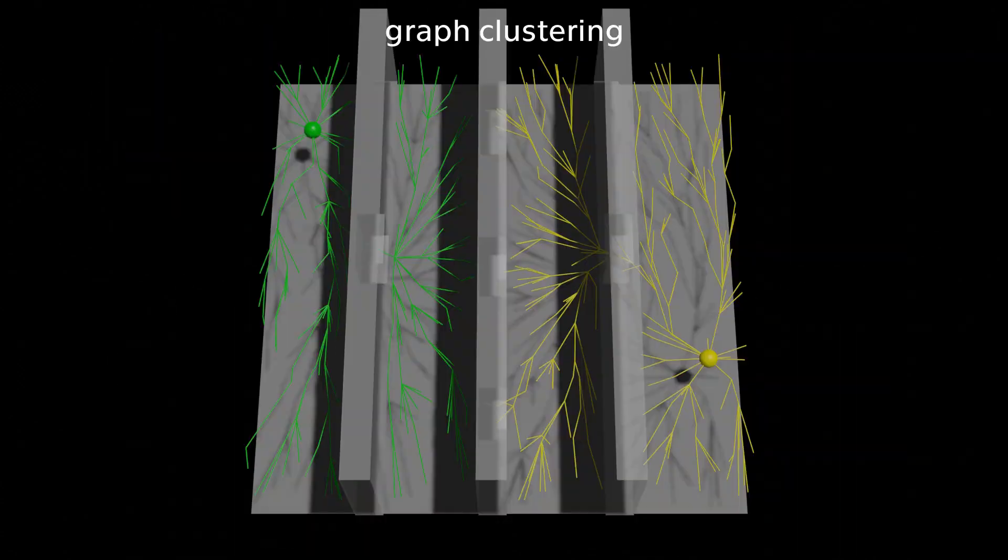We start by dividing the generated dense probabilistic roadmap into two clusters with minimum spanning tree structure with start and goal configurations as the initial centroids.